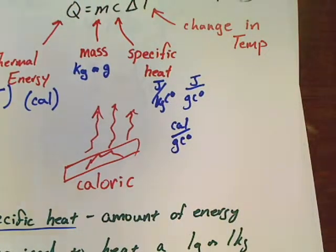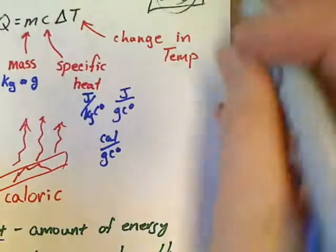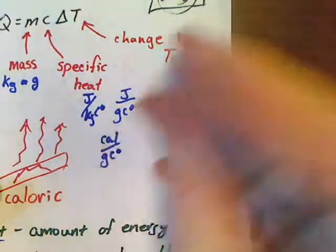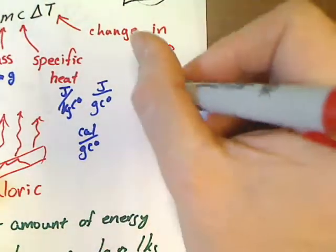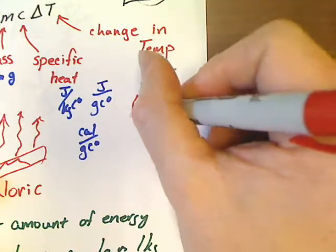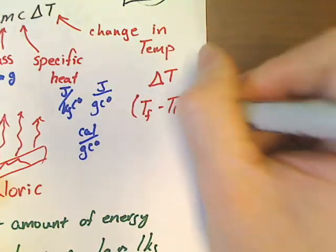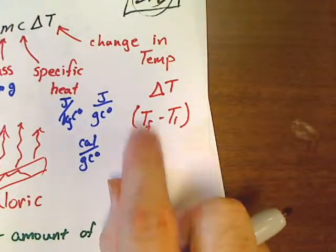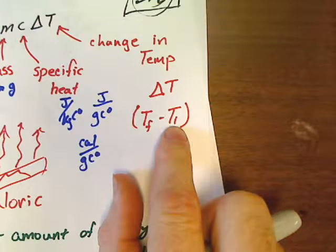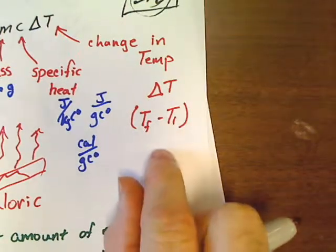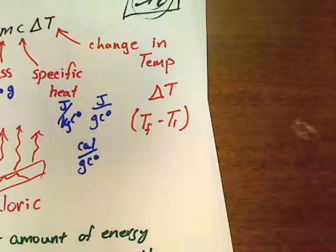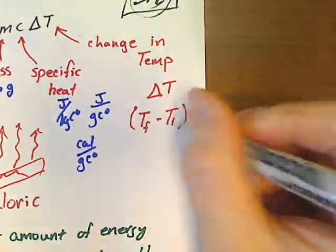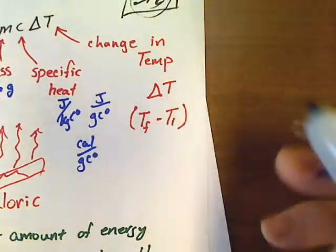The only other thing I want to point out is about delta T. Delta T means a change in temperature, which means delta T can be rewritten as temperature final minus temperature initial. Some problems will give you a temperature final and a temperature initial for you to subtract. Some problems will literally just give you a delta T.